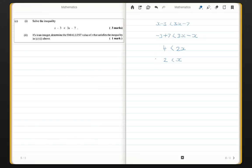For part 2 now, it says if x is an integer, determine the smallest value of x that satisfies the inequality above. The first hint would be integer. The second hint would be smallest. So, our statement up here says x is greater than 2. The smallest possible value I can choose that is greater than 2, that is an integer, is 3. And this is my answer for part 2.